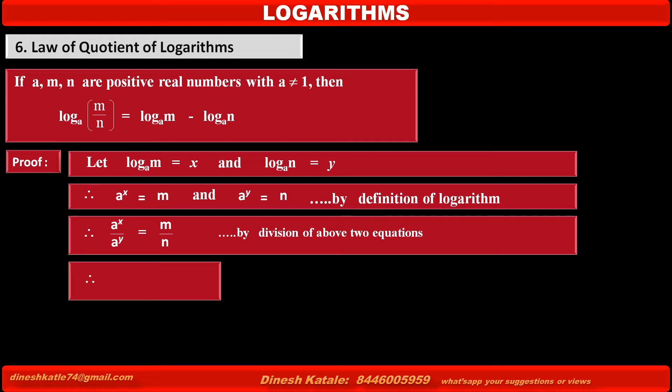Therefore, by using the index law of division, we get a raised to x upon a raised to y, that is, according to index law, a raised to x minus y, is equal to the right-hand side as it is, m upon n.